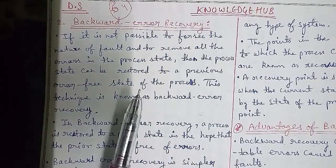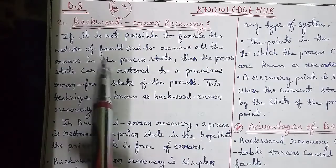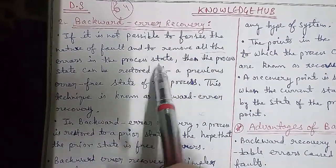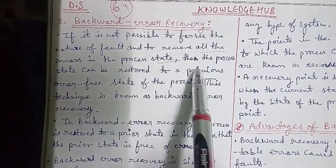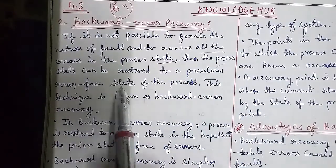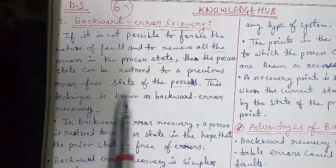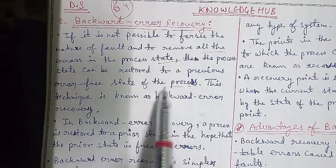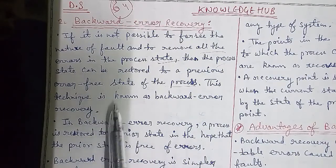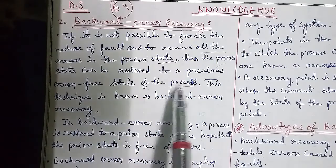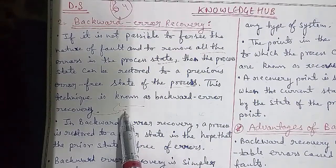Starting with backward error recovery: if it is not possible to foresee the nature of the fault and to remove all the errors in the process state, then the process state can be restored to the previous error-free state of the process. This technique is known as backward error recovery.